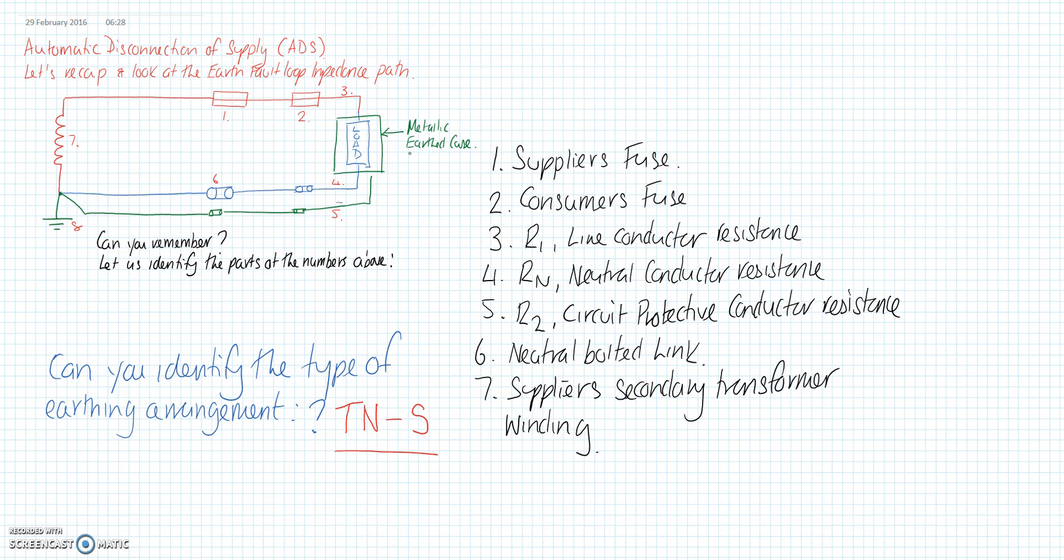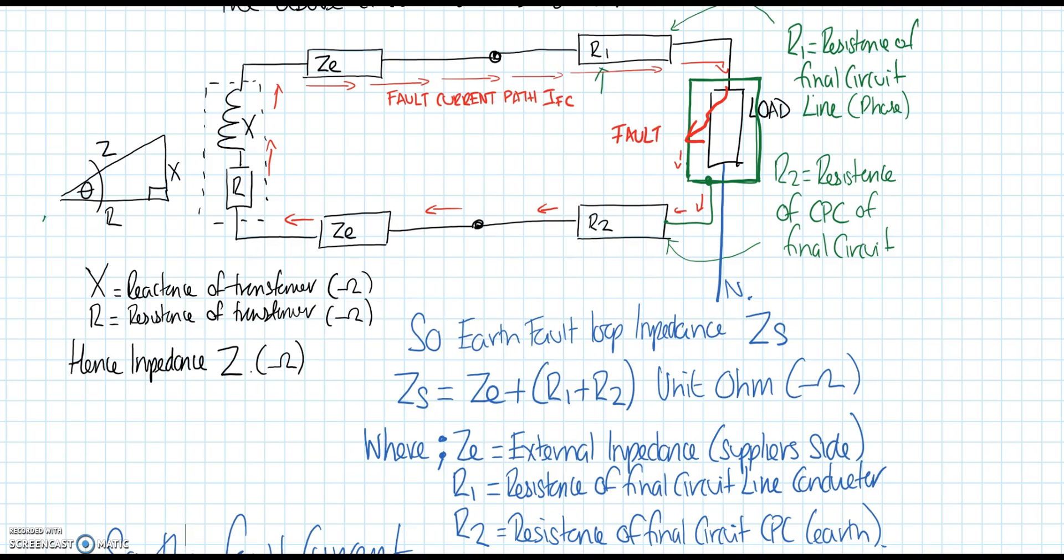We've drawn the circuit using resistors to identify the various resistances and impedances throughout the loop. The neutral is avoided now because during a phase earth or line earth fault, the neutral wouldn't come into play. From left to right, this is our supply transformer in our sub. We've got a little bit of reactance, hence why we have impedance.